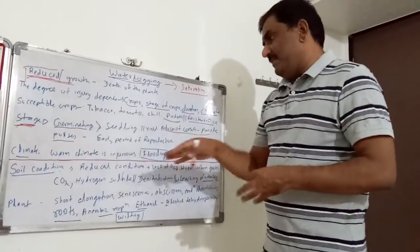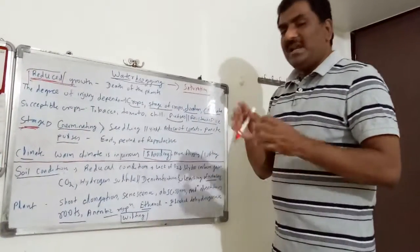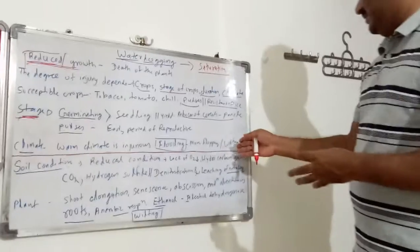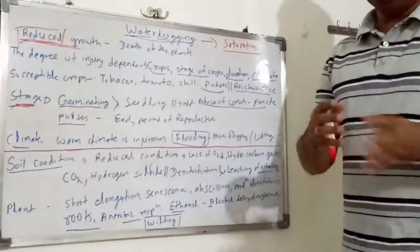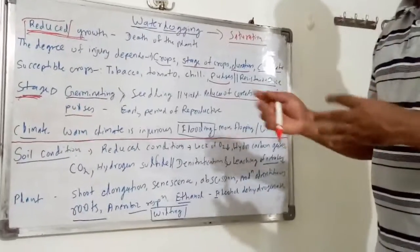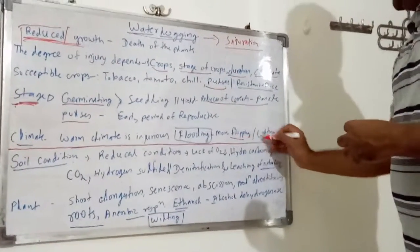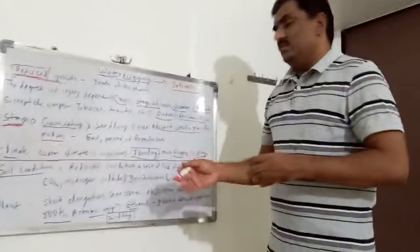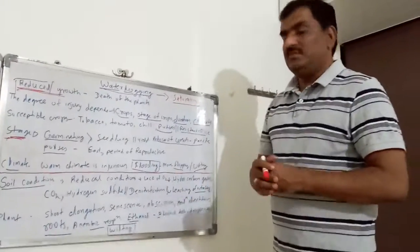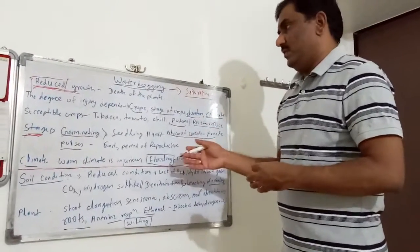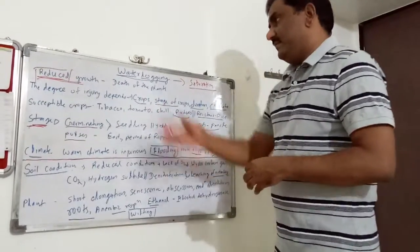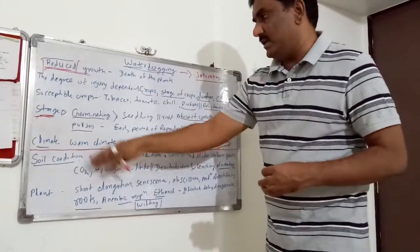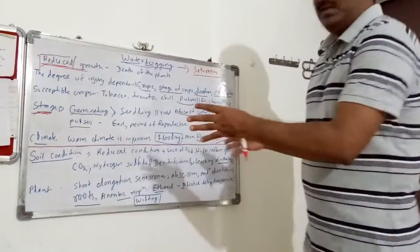Regarding climate, warm climate is more injurious than cold climate. This is obviously seen in tobacco — when flooding occurs, when inundation hours are there, there is flopping and wilting of tobacco. This shows that warm climate is more injurious than cold climate in case of waterlogging. These are the different factors that affect waterlogging.